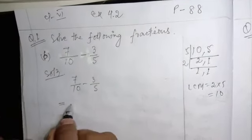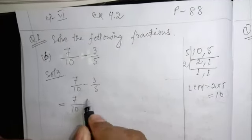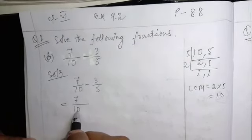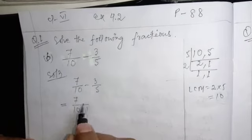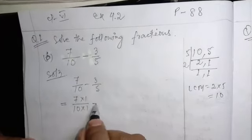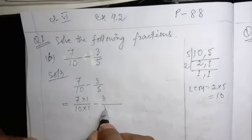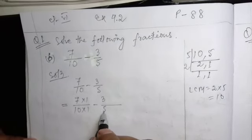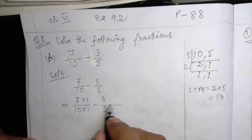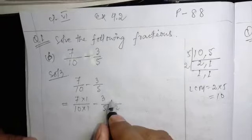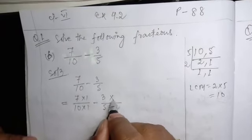So we need to make their denominator 10. It is already 10, then you just multiply with 1 minus 3 by 5. Here 5, we need to make it 10, then you multiply with 2. Same number should be multiplied at the numerator.